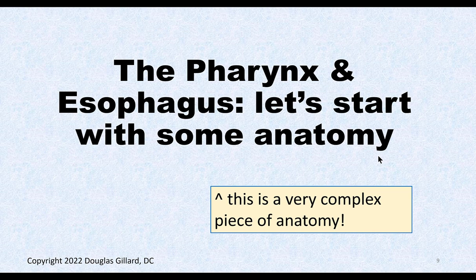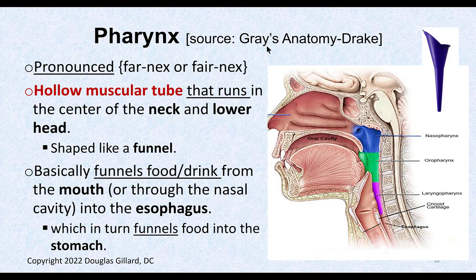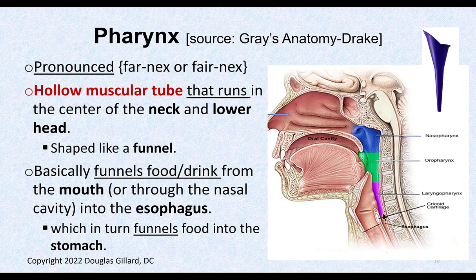Let's look at this very complicated pharynx. It's pronounced pharynx or pharynx — tomato, tomato. It's basically a hollow tube that runs through the center of the neck. It's shaped like a funnel — wider at the top, more narrow down below. It takes food and liquid from the mouth and passes it down to the esophagus, which takes it all the way down to the stomach. If you've got water or food in your nose, it can also connect to the esophagus through the nasopharynx.